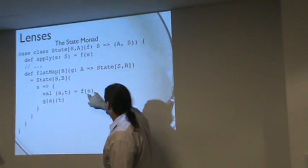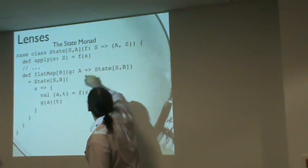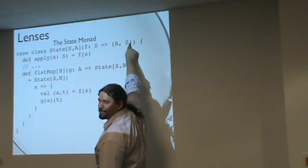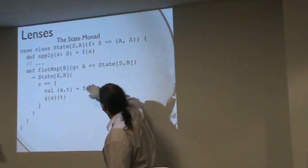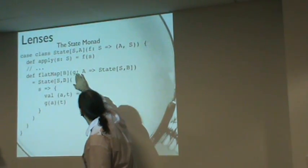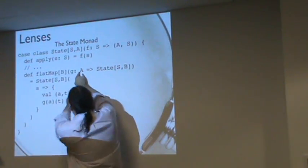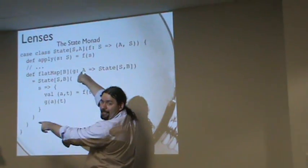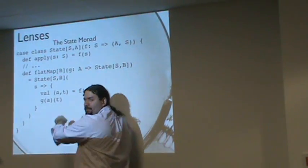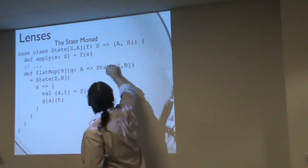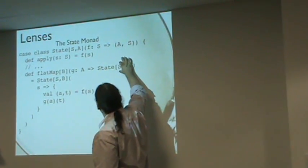What I could do is I can compute the A and my output state, maybe S2. Then I could feed that to G. So I take G, it gave me an A, now G needs an A, so I'll feed it the A that I got out of the first state action, and then I'll take the intervening state and feed it along. This is going to give me a B and a new state.